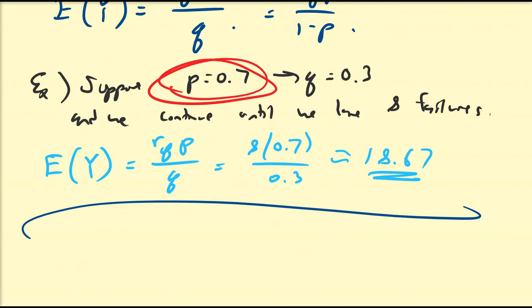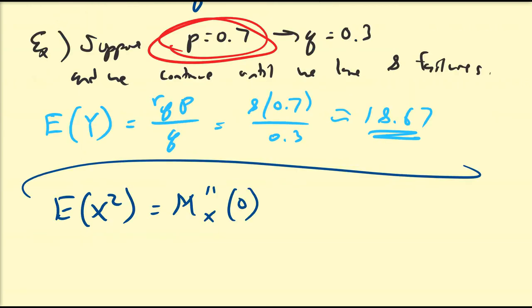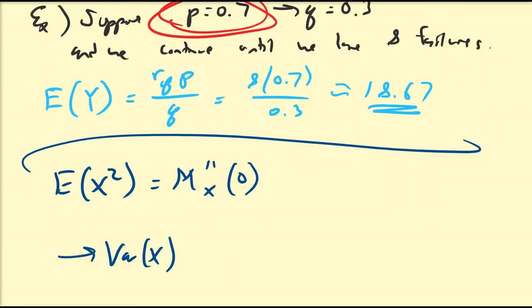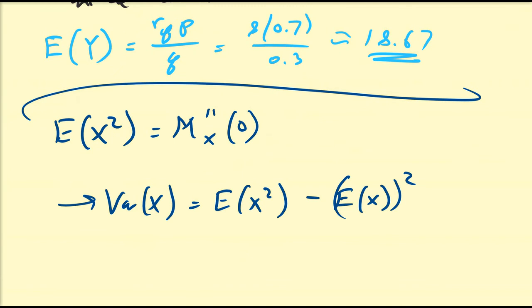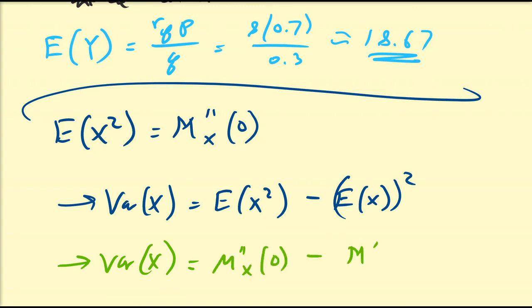You can use this moment generating function to calculate the second moment, which is the second derivative of M_X(t) evaluated at 0. Once you have the second moment, the variance is E[X²] - (E[X])², which in terms of the MGF is M''_X(0) - (M'_X(0))². Similarly, you can do this for Y if you want to measure the number of successes instead of the number of failures.